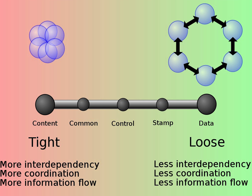Data coupling occurs when modules share data through, for example, parameters. Each datum is an elementary piece, and these are the only data shared, for example, passing an integer to a function that computes a square root.